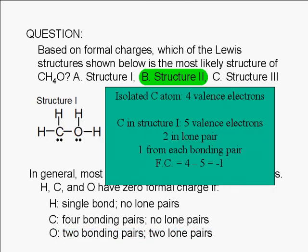Here's a quick review for calculating formal charges. A carbon atom by itself has four valence electrons. In structure 1, it appears to own five: two in the lone pair and one from each of the three bonding pairs. Remember that for purposes of calculating formal charge, an atom is assigned ownership of half of the shared electrons. Therefore, the carbon atom in structure 1 appears to have gained one electron. Its formal charge is negative 1.